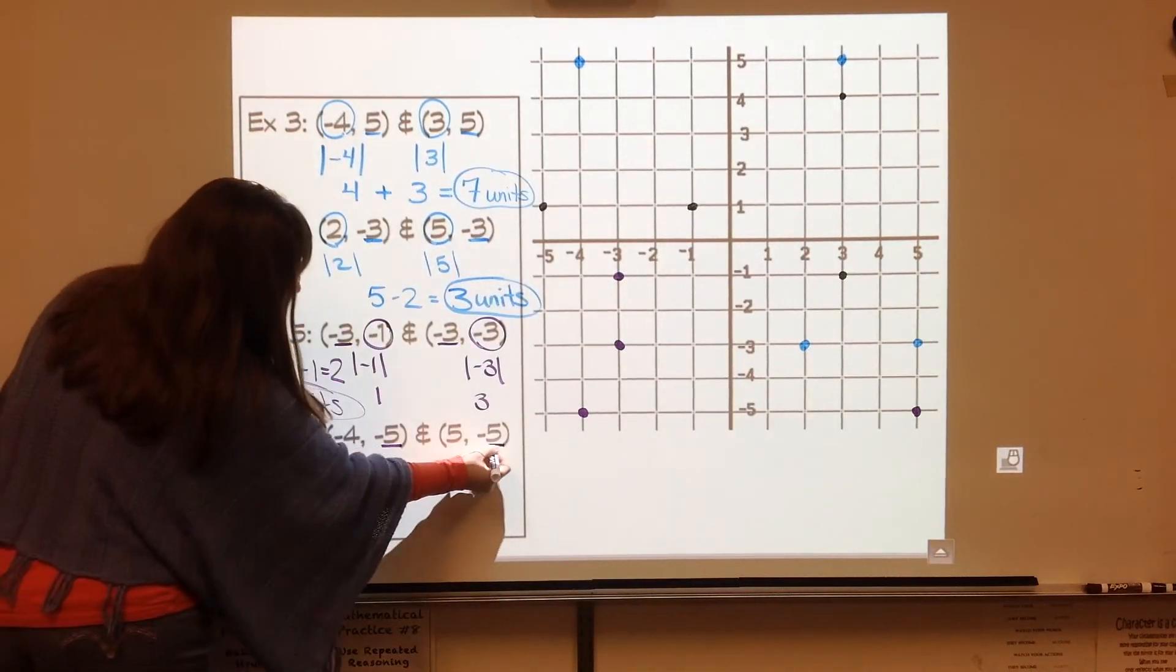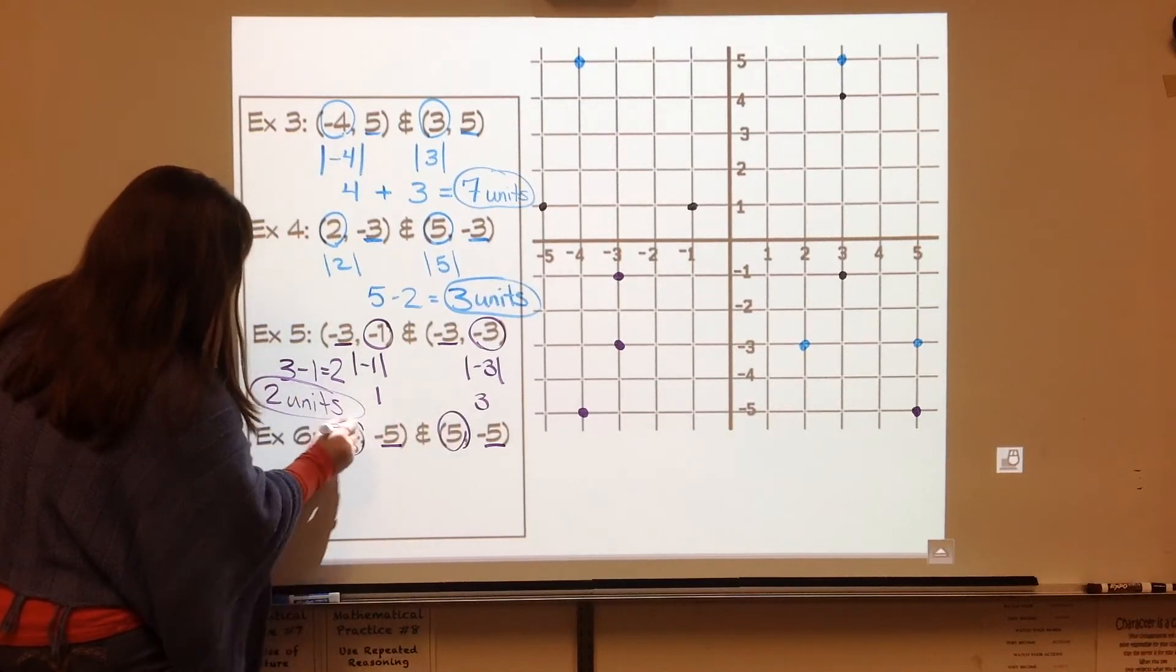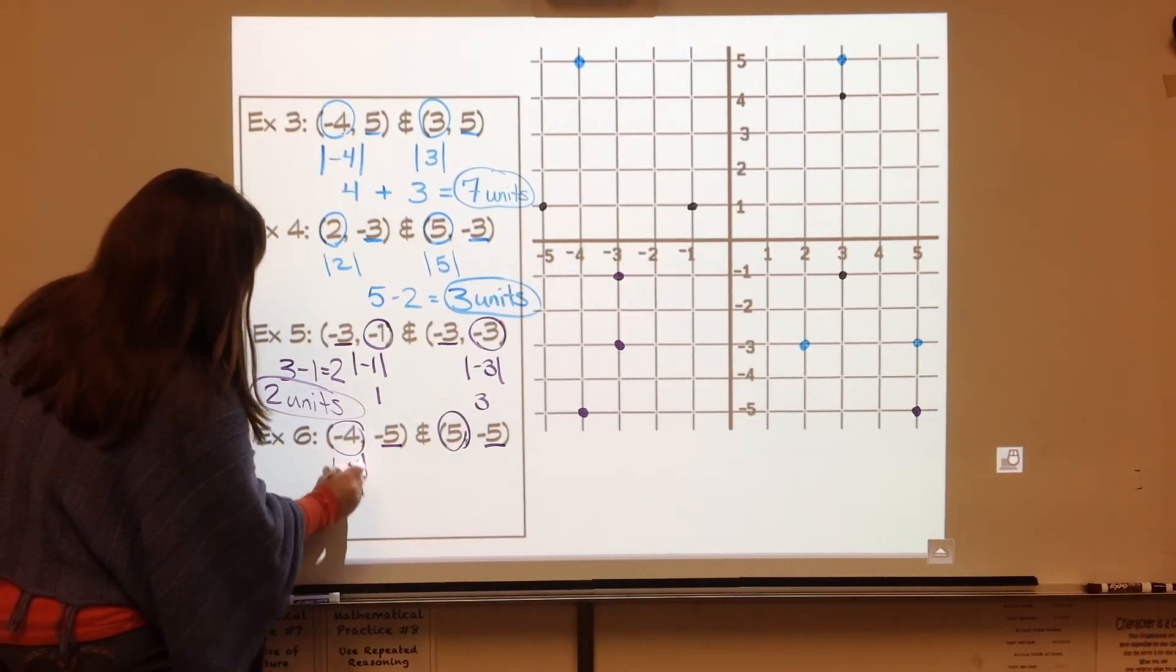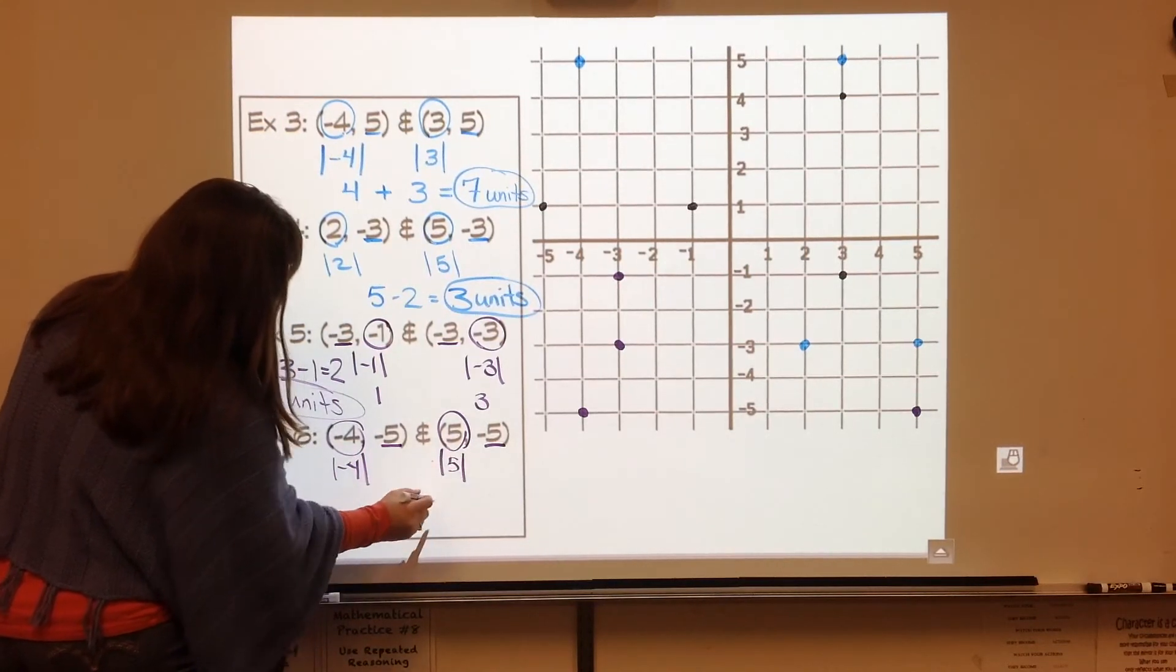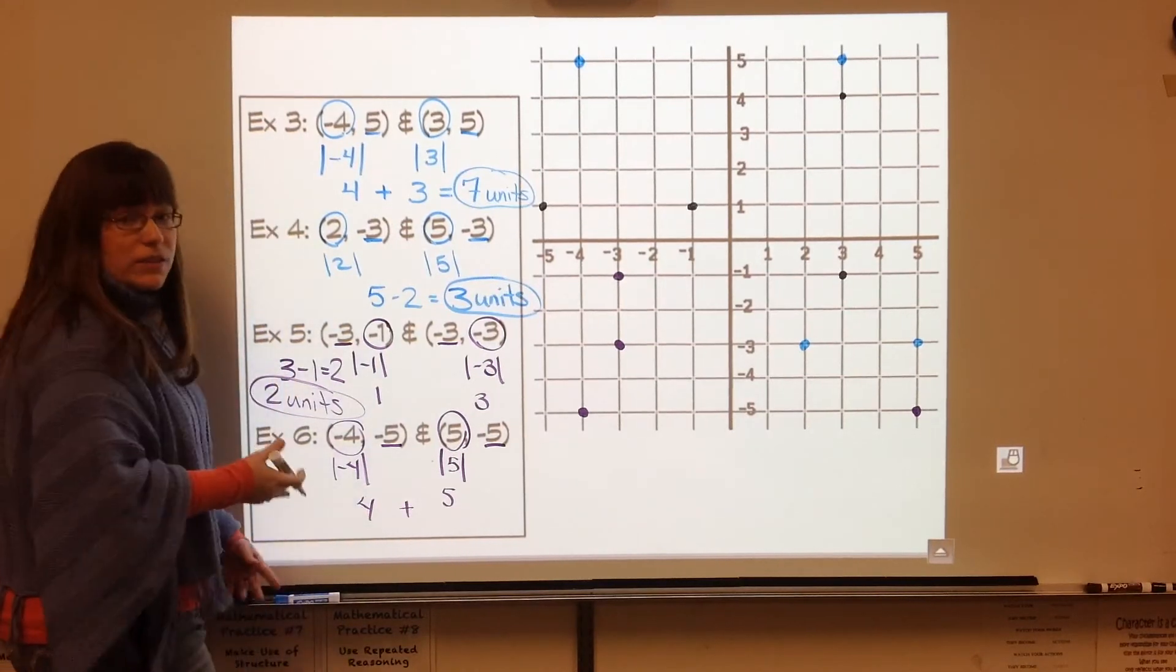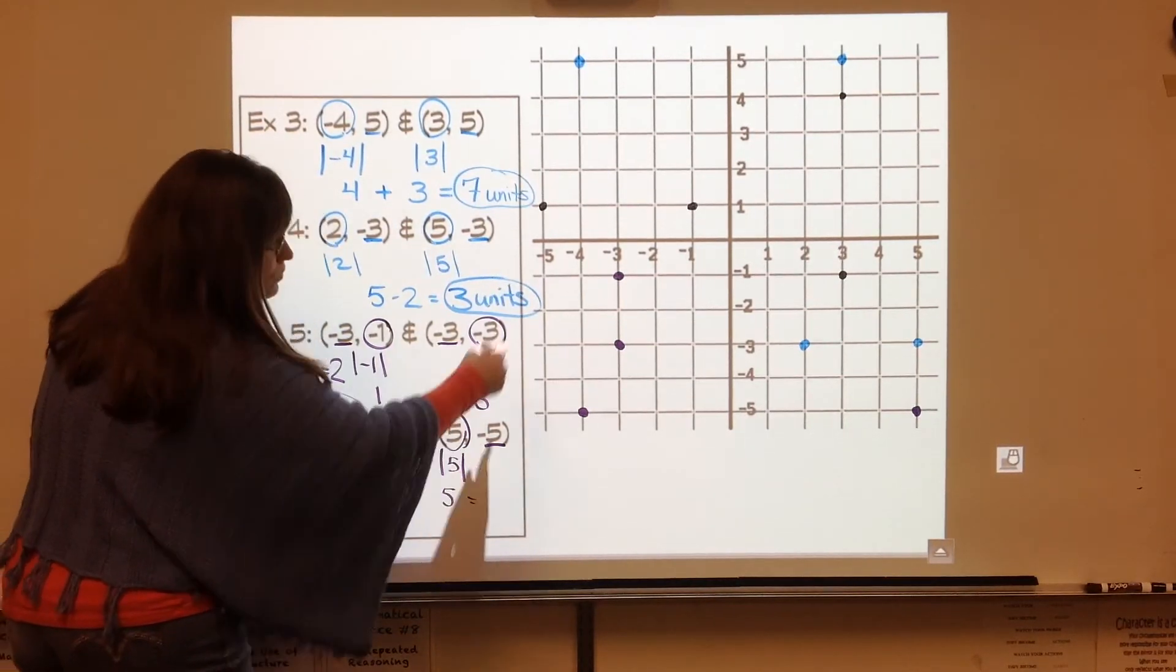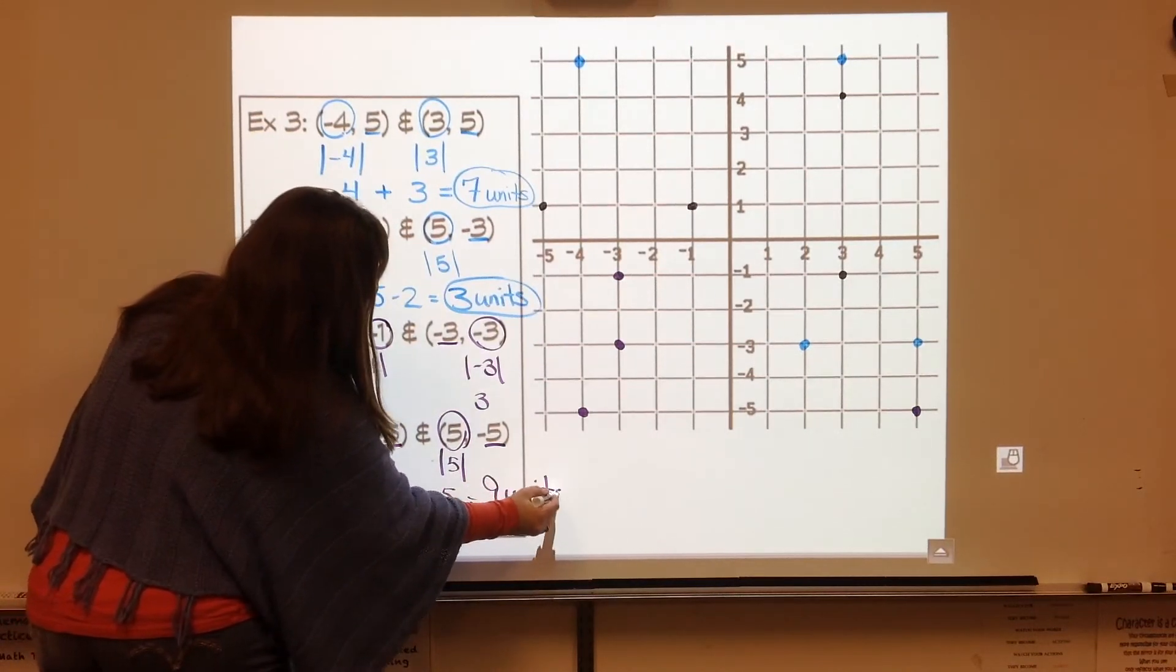So I want to prove that with absolute value. I'm noticing the negative five y coordinate is the same. So I'm going to work with my negative four and my positive five. When I take the absolute value of each of those, I get four plus five, because there are two different quadrants. And then that proves my nine units.